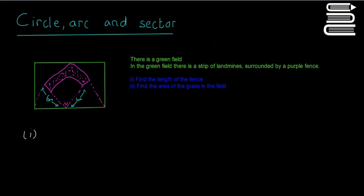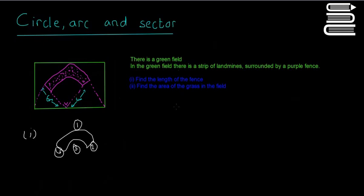Part 1: length of the fence. I'll draw the shape out. We need to find the length of this shape, so I'm going to break it up. I'll call this side 1, side 2, side 3, and side 4. There are four different sides to this shape, and we need to find the length of each side to get the total length of the fence.